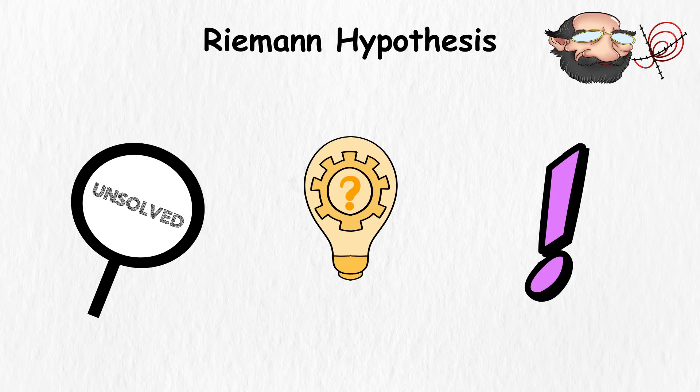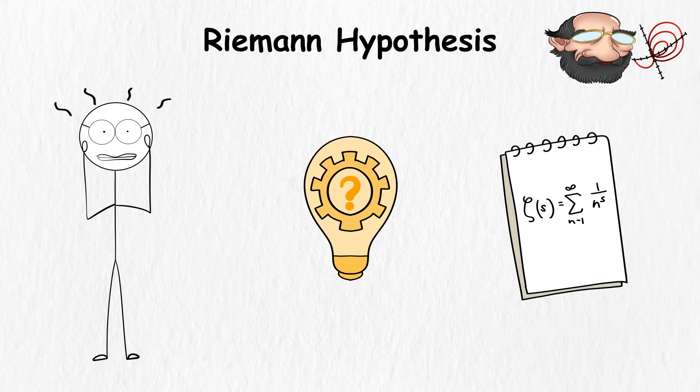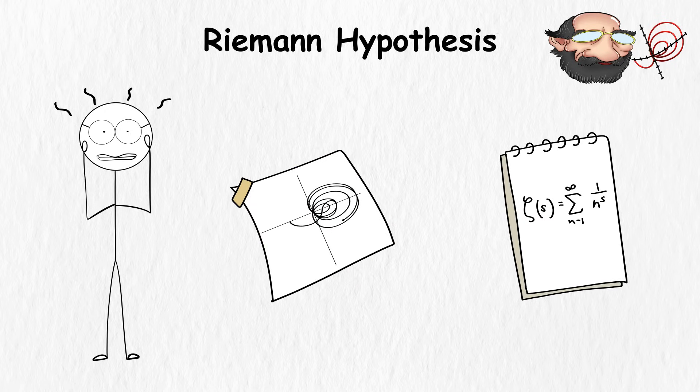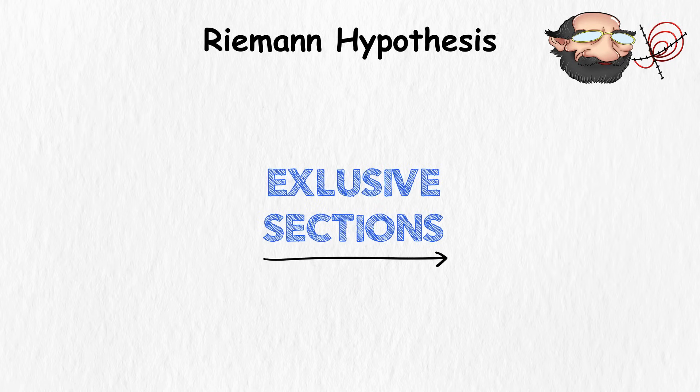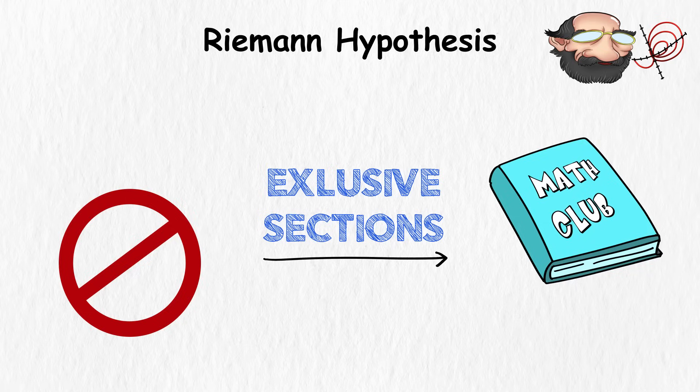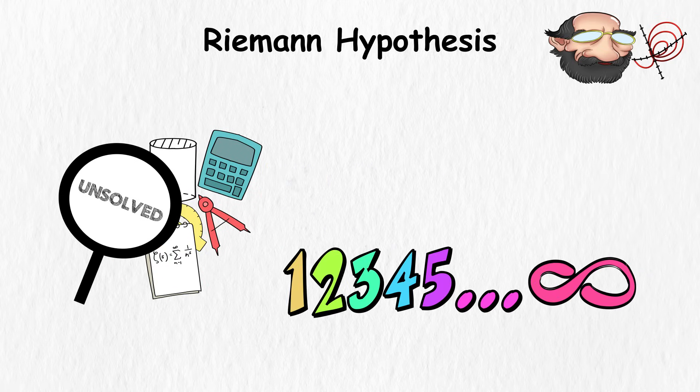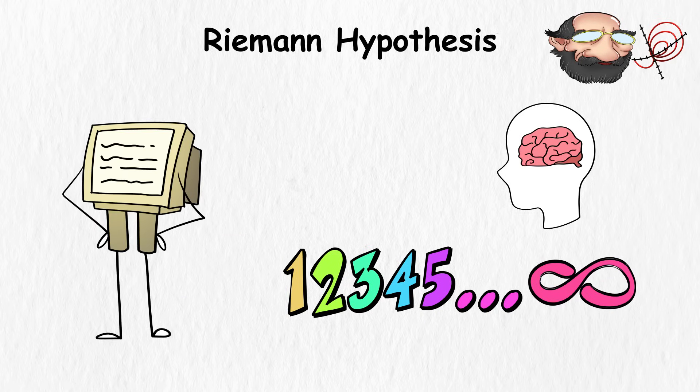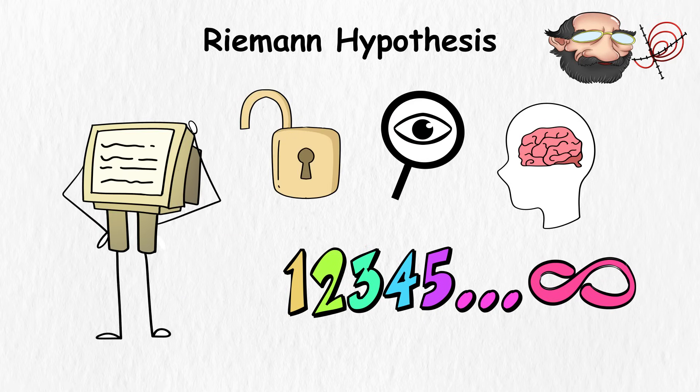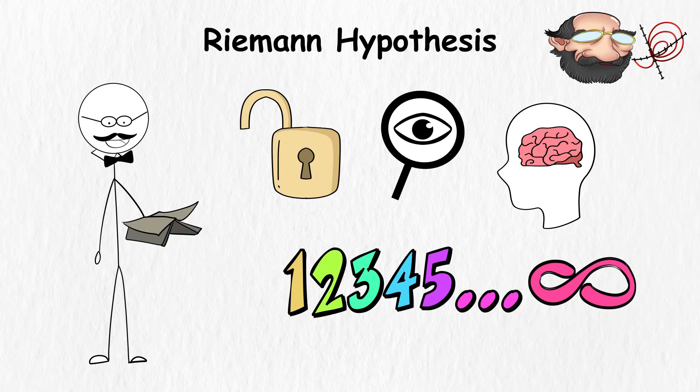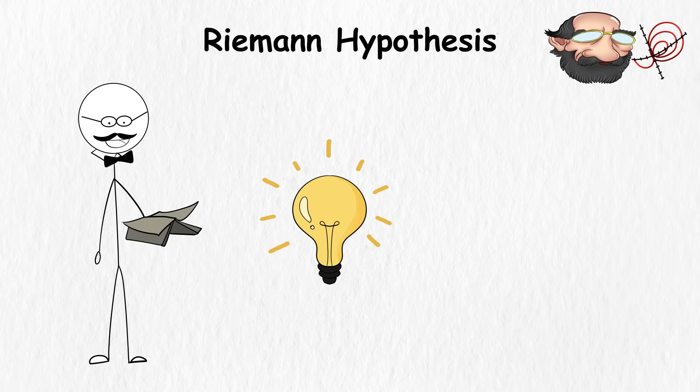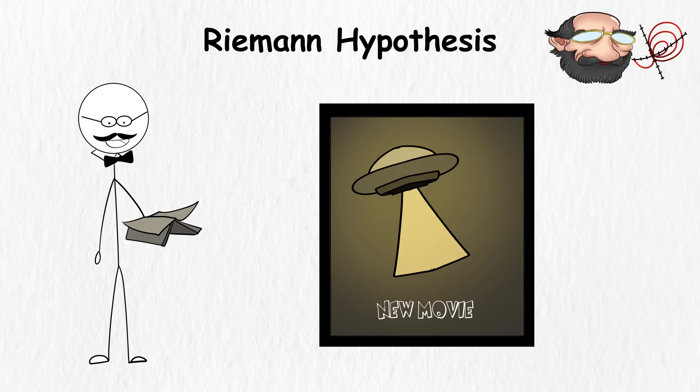It sounds like a mathematical fairy tale, but there's a reason why it's unsolved. The reason why this hypothesis has given everyone a headache is that this zeta function and its fancy complex plane are like the exclusive sections of the math club, blocked off and almost impossible to access.